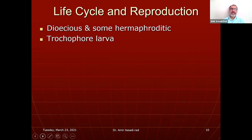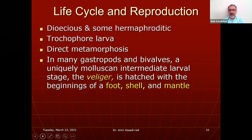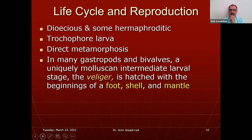In many gastropods and bivalves, a uniquely molluscan intermediate larval stage is the veliger stage. It hatches with a foot, shell, and mantle already present. It looks like a miniature adult bivalve. In the lab, we do have veliger larva slides — they look like a small version of a bivalve.